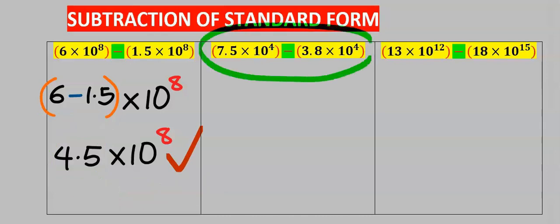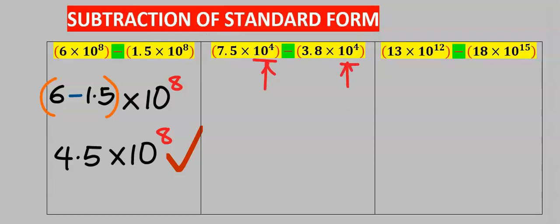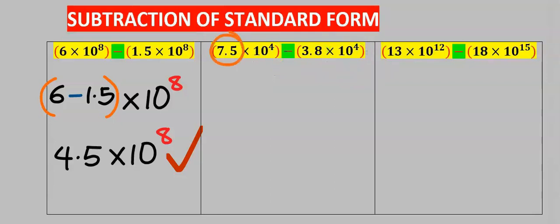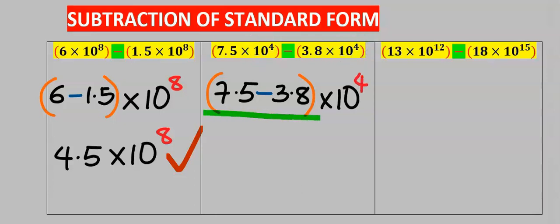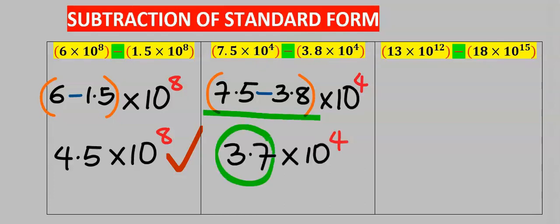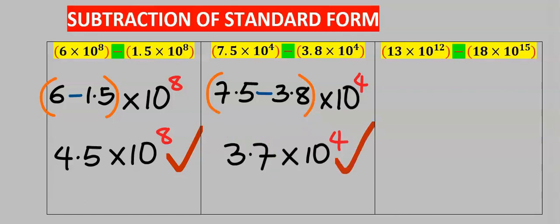Next, let's consider this question. The tens are the same — 10 to the power of 4 — hence we are going to subtract. We compute 7.5 minus 3.5 minus 3.8. Since the powers of the 10 are the same, I'm going to multiply this with 10 to the power of 4. 7.5 minus 3.5 minus 3.8 gives 3.7, which is between 1 and 10, and this is our answer.